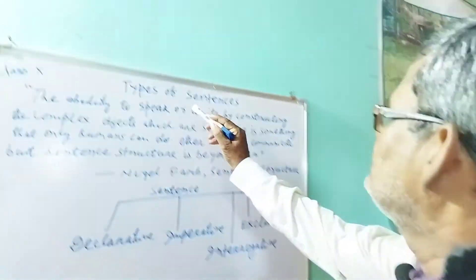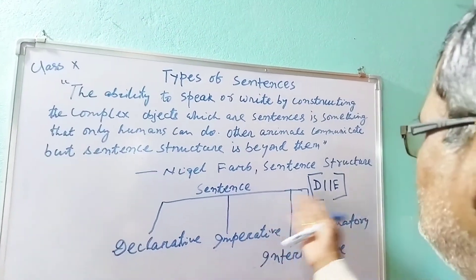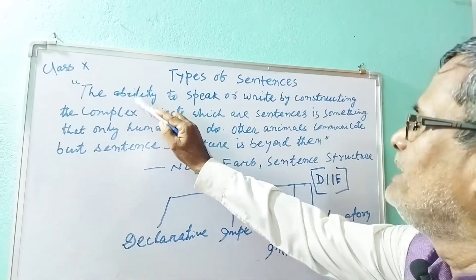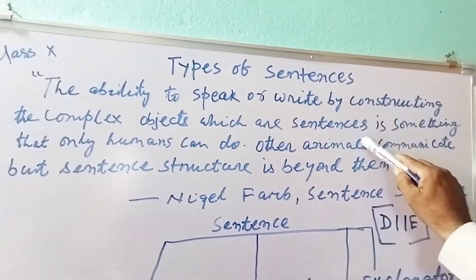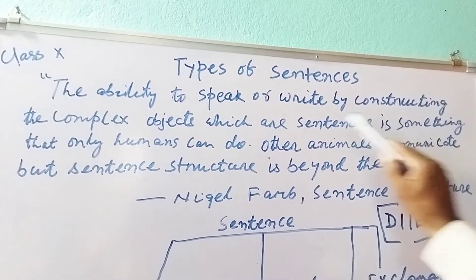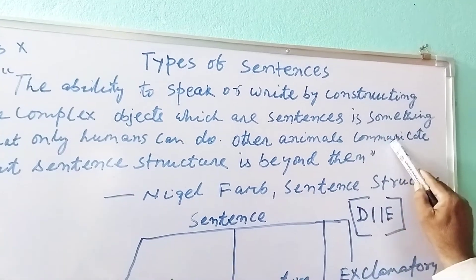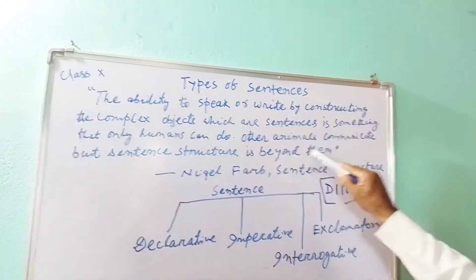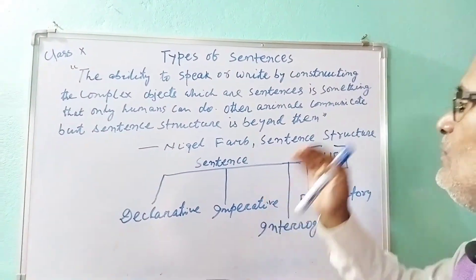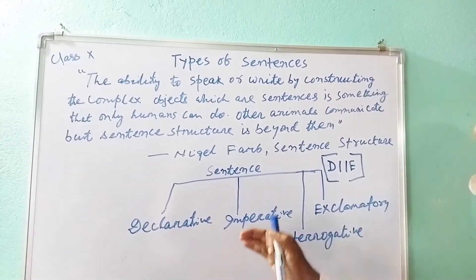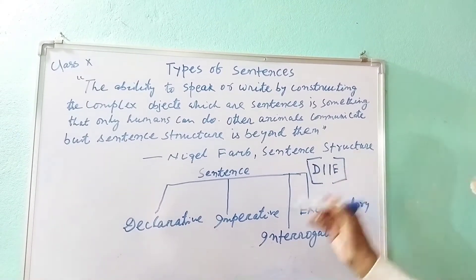Now let us learn types of sentences. First, remember what a sentence is. The ability to speak or write by constructing complex objects which are sentences is something that only humans can do. Other animals communicate, but sentence structure is beyond them. Only humans are constrained with some rules and sentence structure.